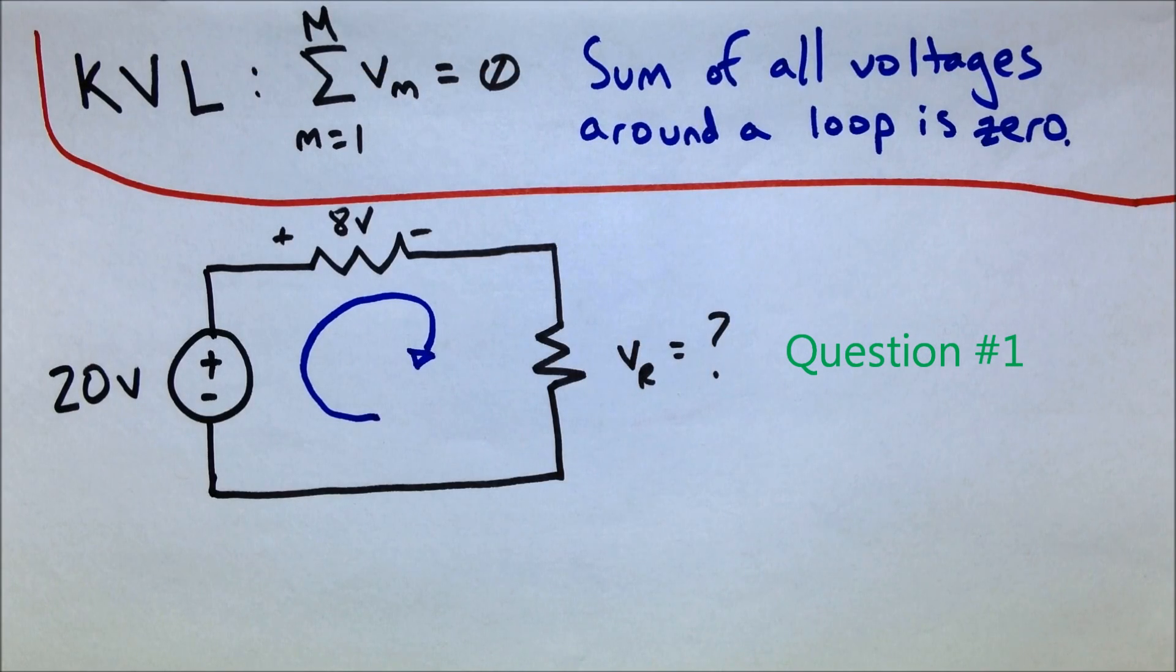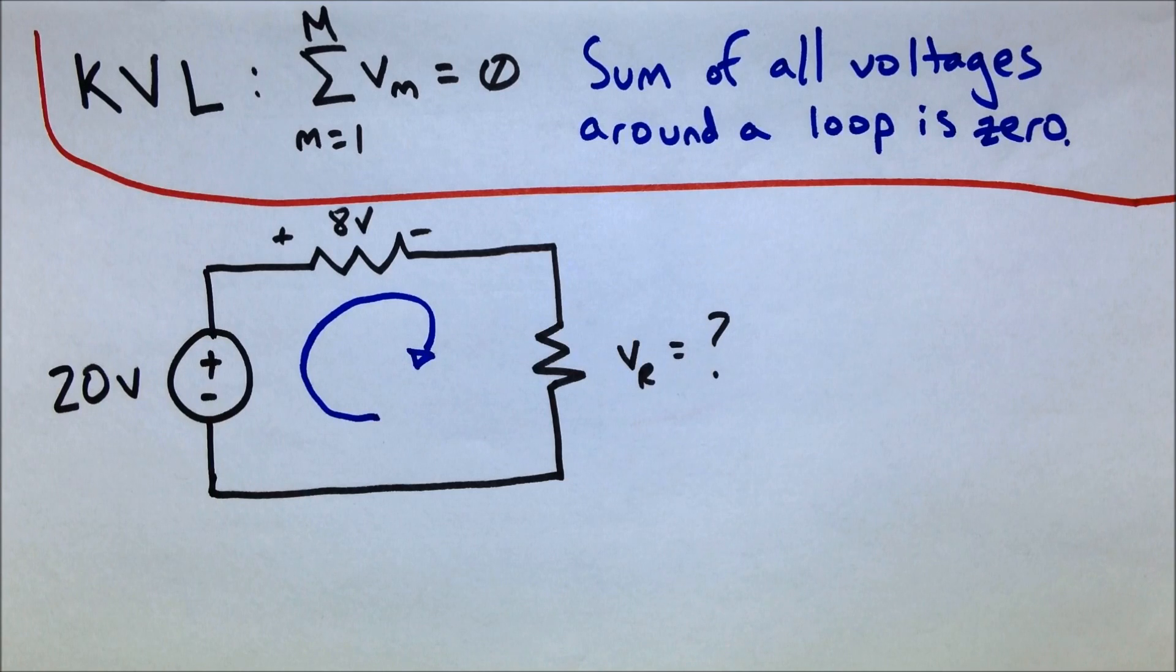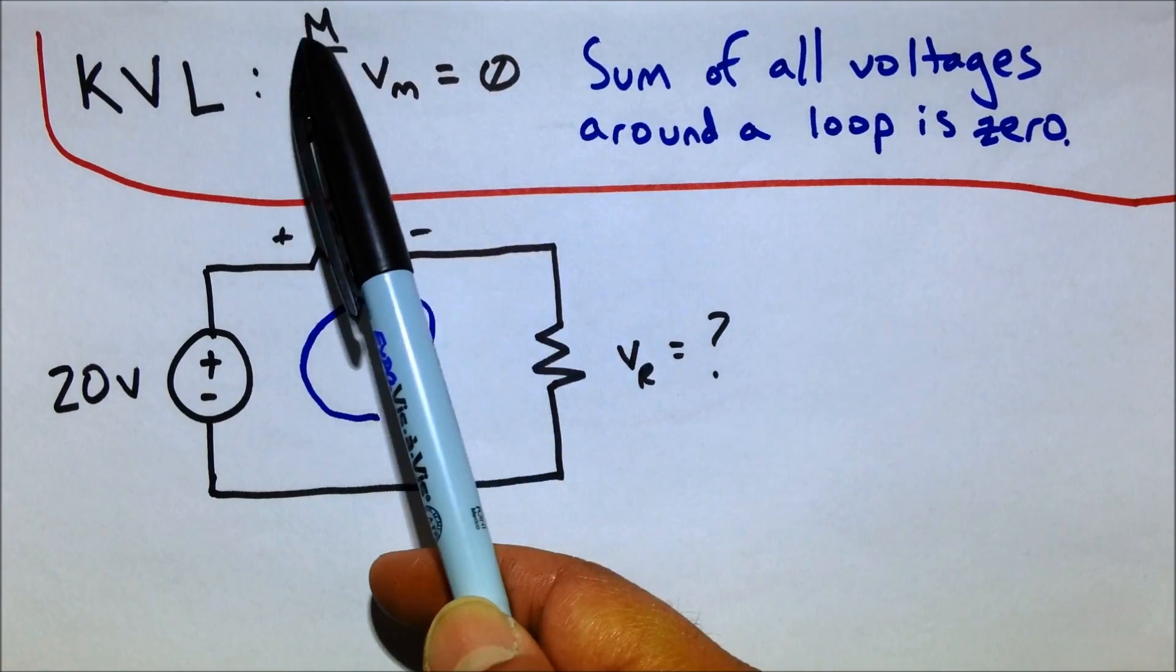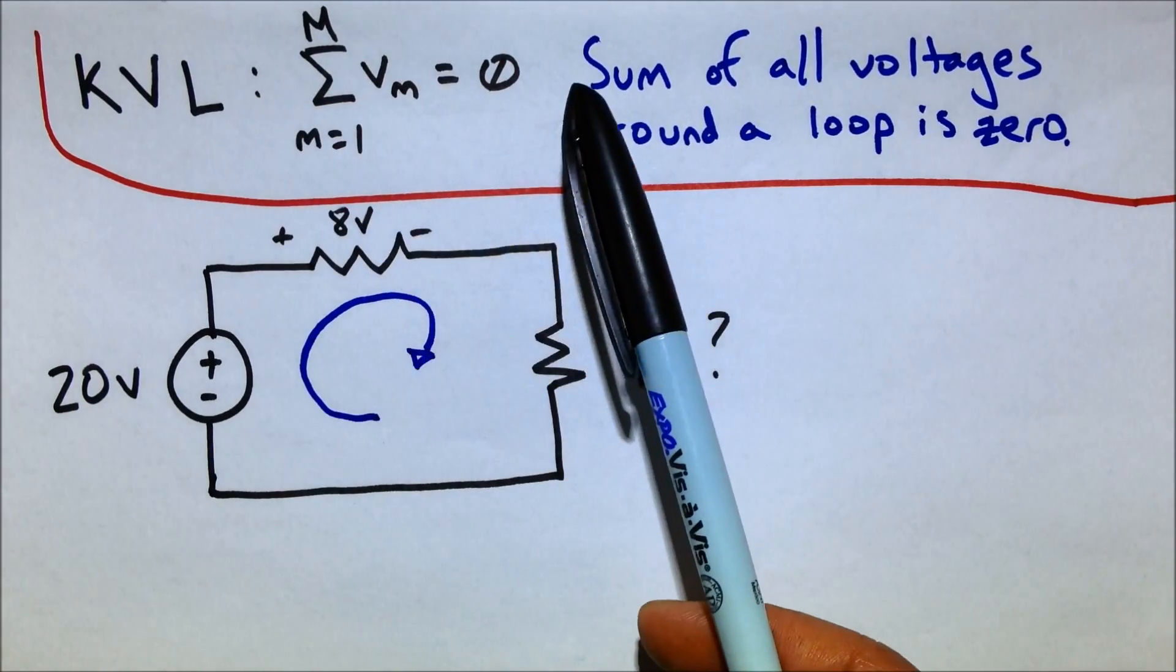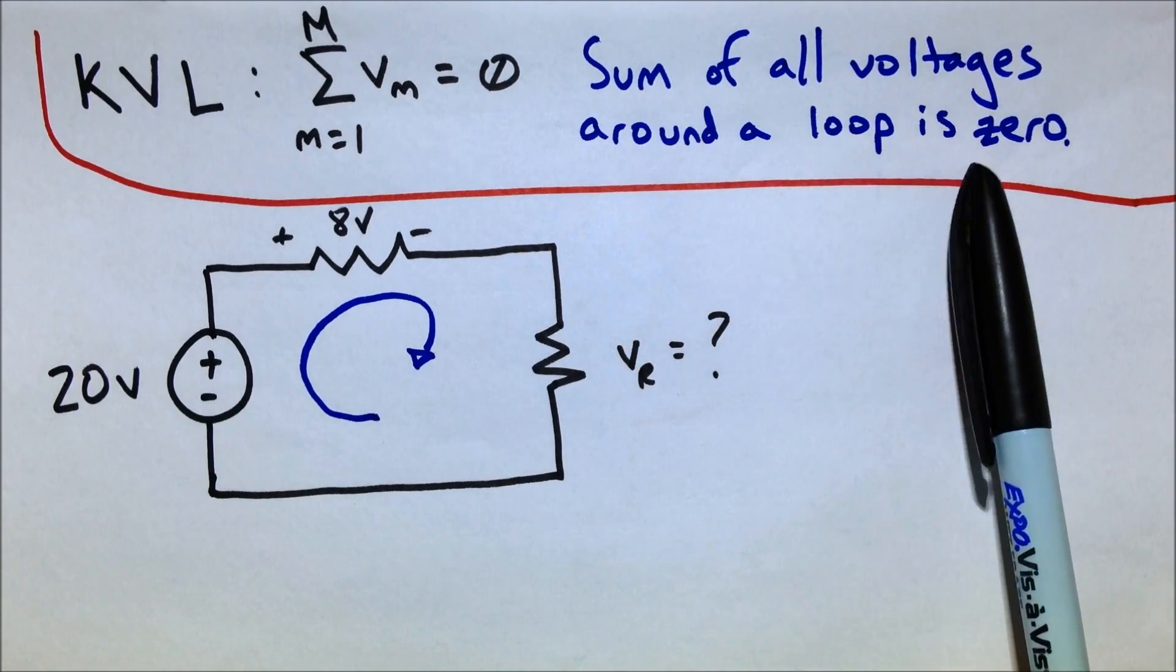Hey, everybody. I thought it'd be kind of neat today to do a Kirchhoff's Voltage Law type of problem. Just to refresh your memory, Kirchhoff's Voltage Law is expressed this way mathematically. And what this means is that the sum of all the voltages around a loop within a circuit is zero.